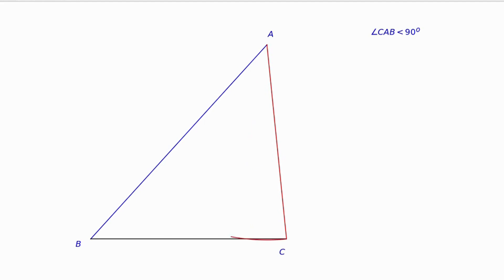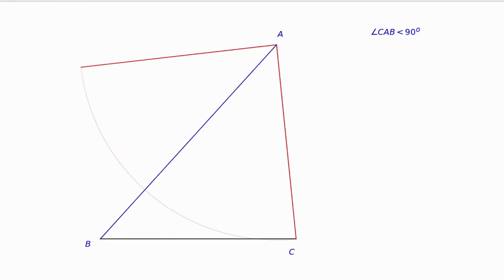Given a triangle ABC and the acute angle CAB, construct an isosceles right triangle AEC at A. It means the angle CAE equals 90 degrees and AC equals AE.